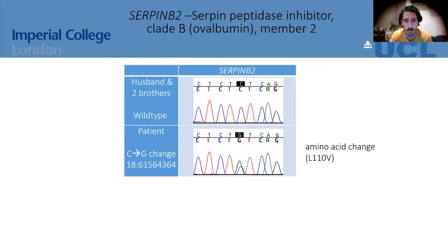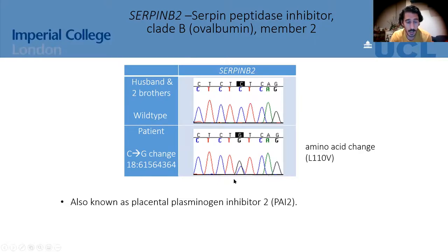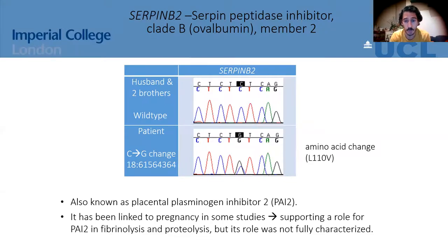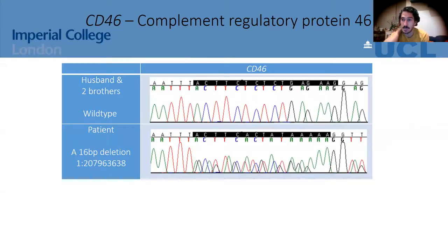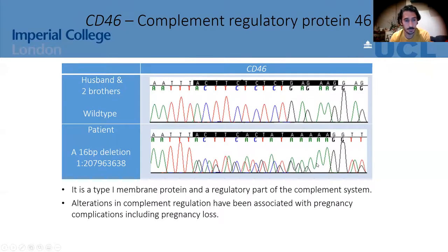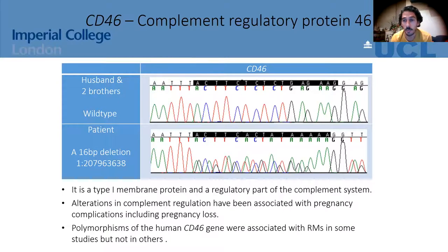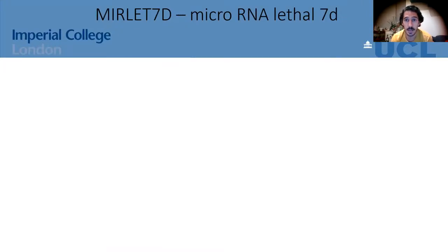The second gene was SERPINB2. Again, the husband and brothers are wild type whereas the patient has a C-to-G missense change. This is also known as placental plasminogen activator inhibitor 2, and has been linked to pregnancy in some studies, though its role was not fully characterized. The third gene we were interested in was complement regulatory protein CD46, which showed a 16 base pair deletion in the 3' UTR. Alterations in complement regulation have been associated with pregnancy complications including pregnancy losses, and polymorphisms in this gene were associated with recurrent miscarriage in some studies but not others.